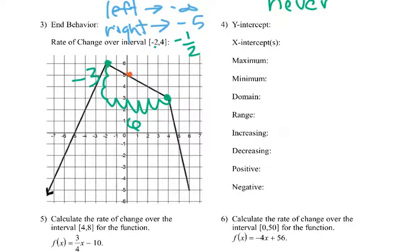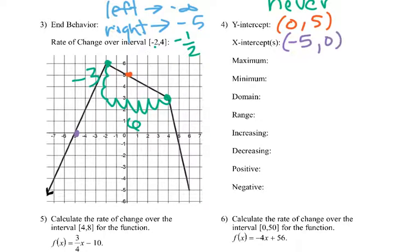Y-intercept — pretty easy to see where it crosses the y-axis. Make sure it's (0, 5), not (5, 0). Then x-intercepts — we've got one here at negative 5, so that's (negative 5, 0). We have a second one that's a little past — we'll call it 4.75. If you did 4.5 or even 5, I would accept those as well.